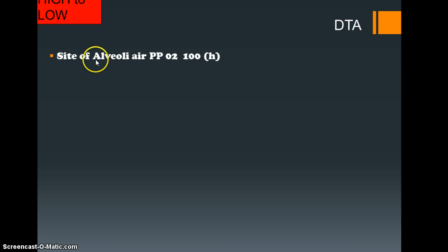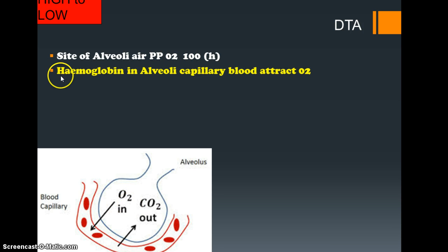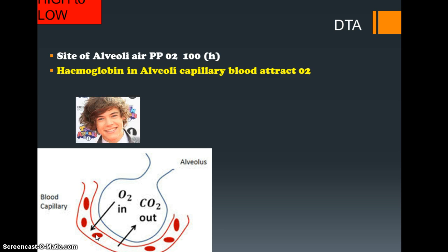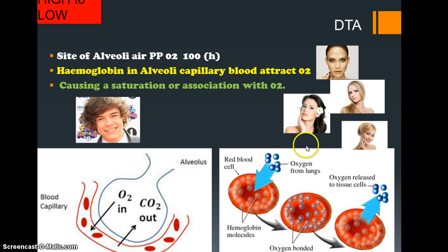At the site of the alveoli there is a partial pressure of O2 of 100. The hemoglobin in the alveoli capillaries is attracted to the O2. Let's take Harry here as our hemoglobin — because of this attraction, each one of these O2 molecules is uncontrollably drawn towards Harry, just as oxygen is drawn towards hemoglobin and then transported off into the working muscles.